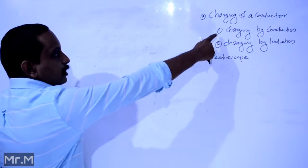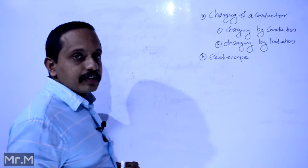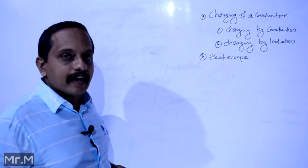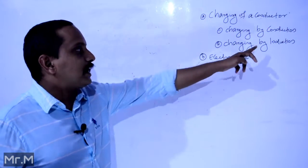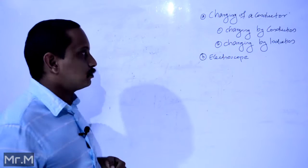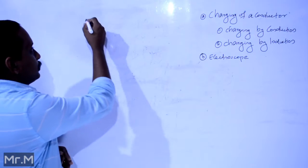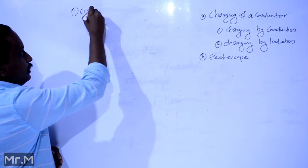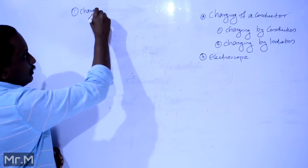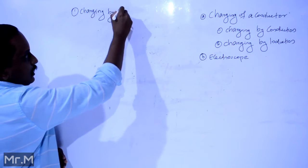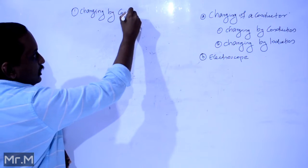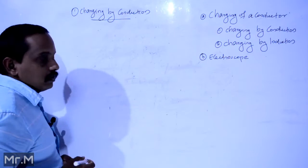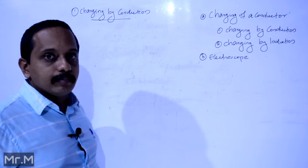You can charge a conductor basically in two ways. The first part is charging by conduction and the second part is charging by induction. Let's start with the first part: charging by conduction.